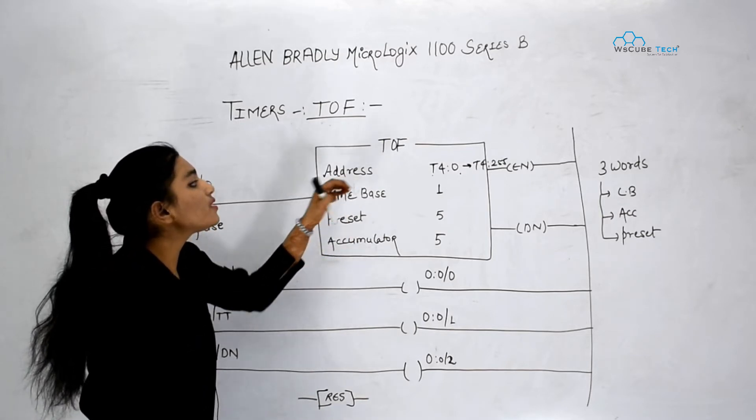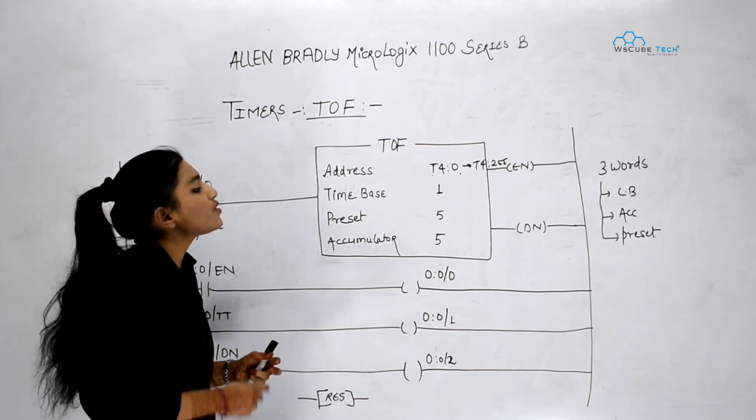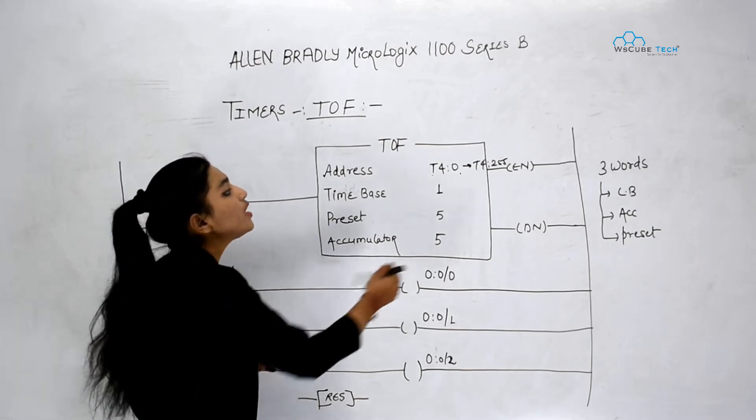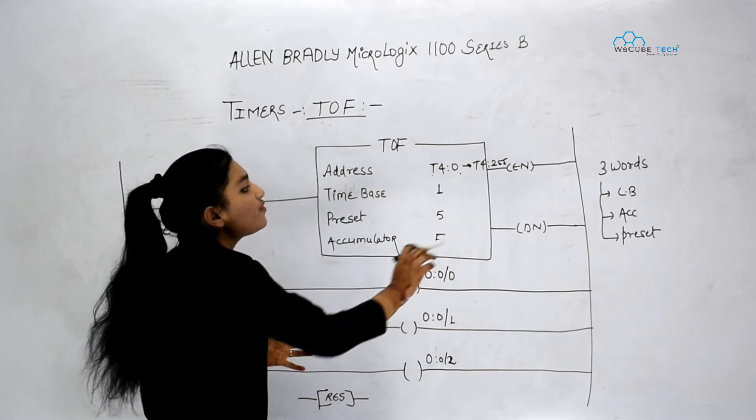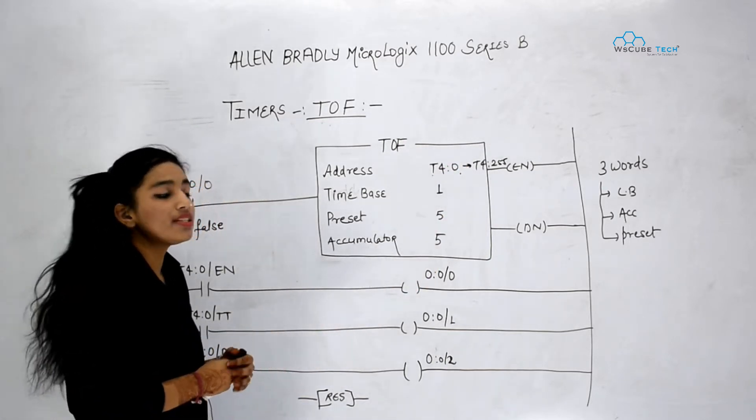Address is the address of TOF. It means the memory address of PLC in which this timer will save. So we have got T4:0 to T4:155. These many counters or timers our PLC provides.